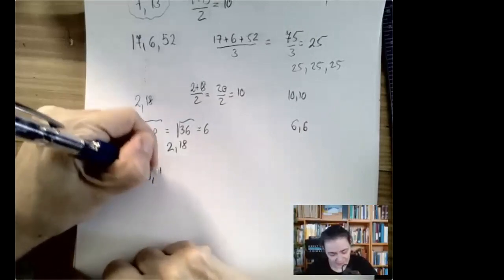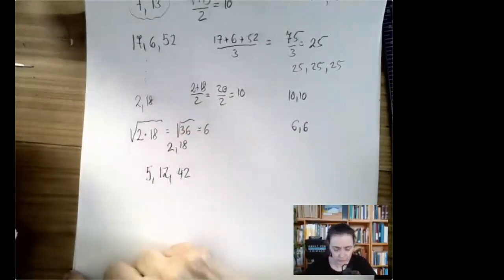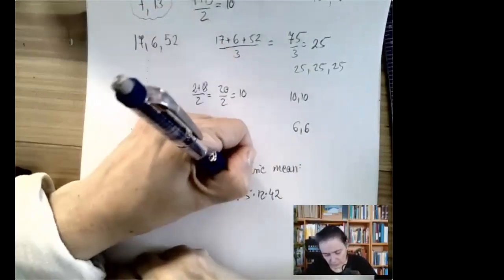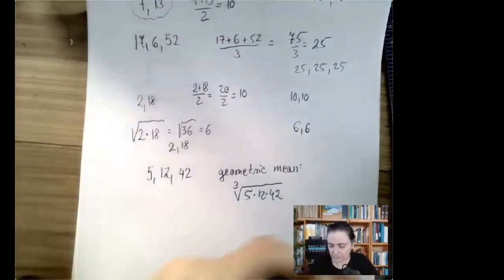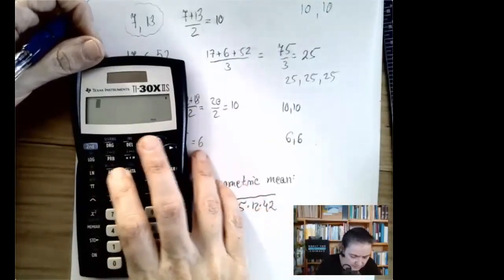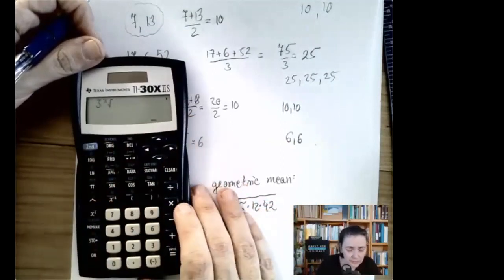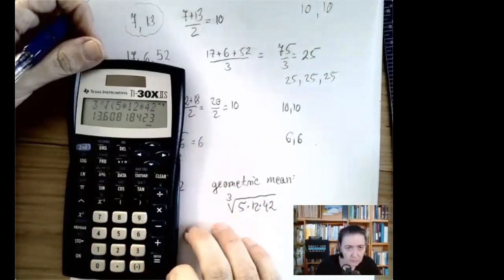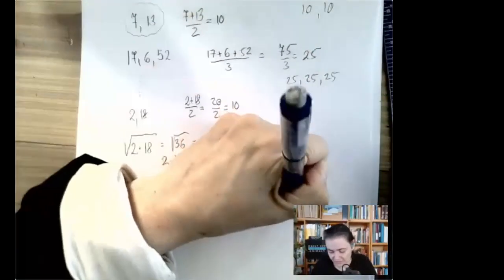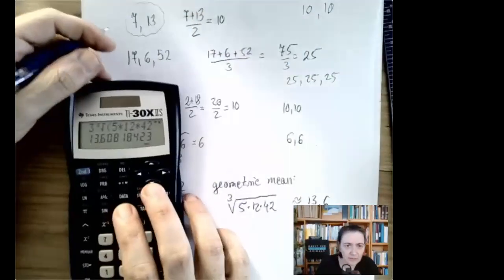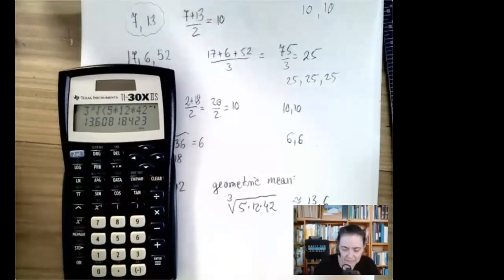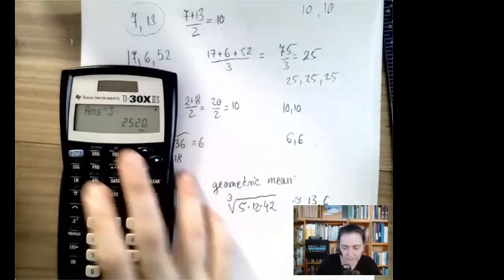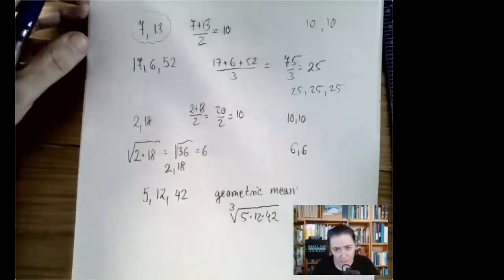For three numbers, we multiply them and then take the third root. So the geometric mean of five, twelve, and forty-two would be the cube root of five times twelve times forty-two, which you can compute as (5 × 12 × 42)^(1/3), giving approximately 13.6. That value, when raised to the third power, gives the same product as five times twelve times forty-two.